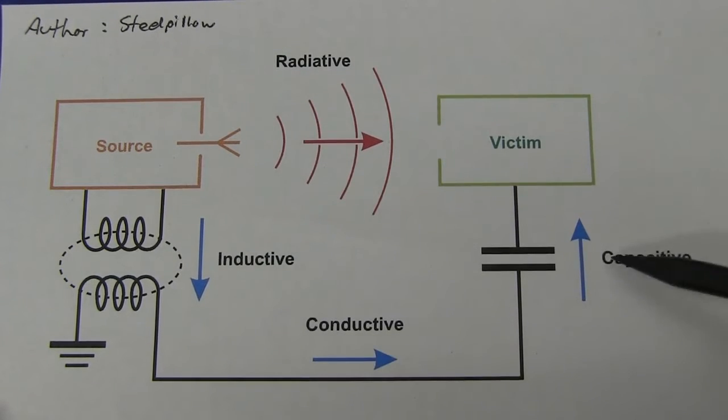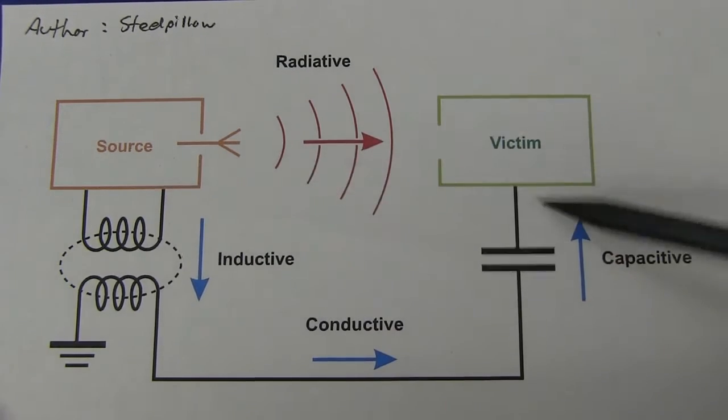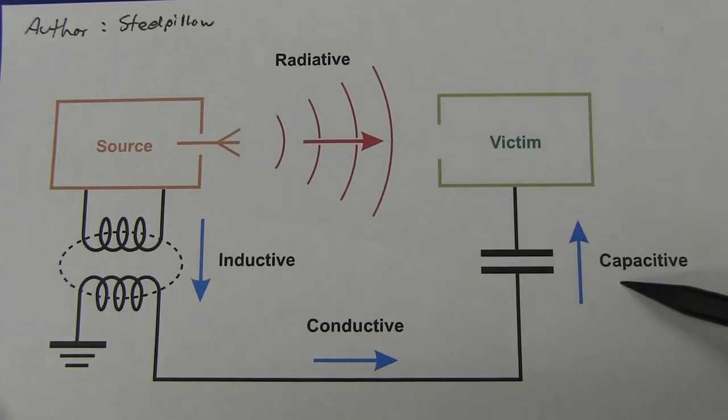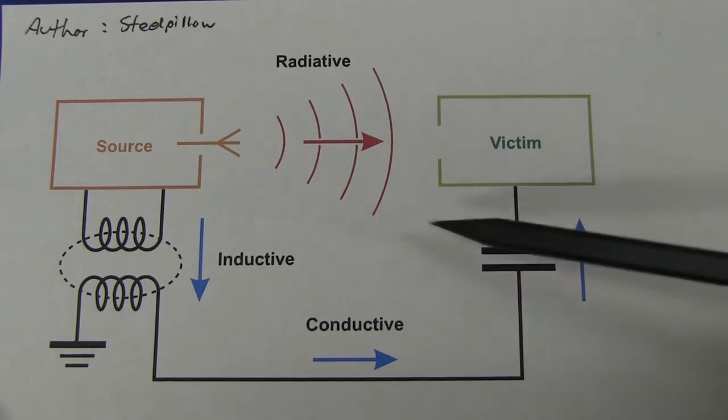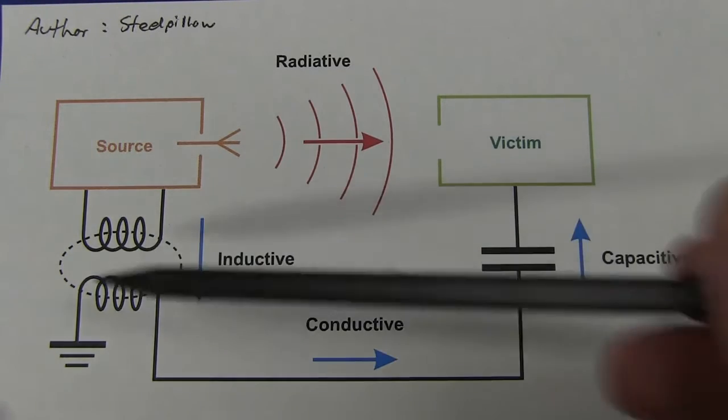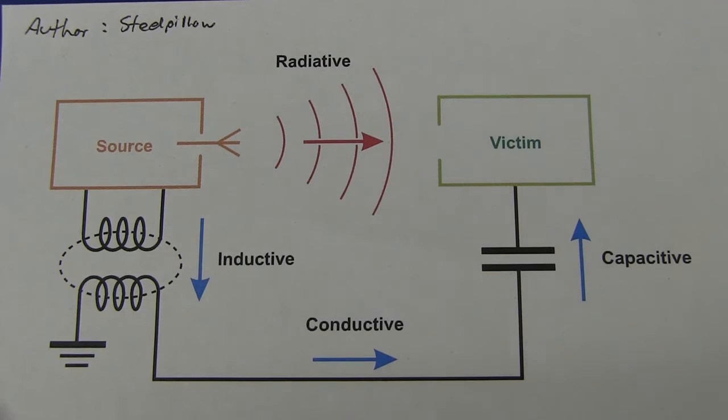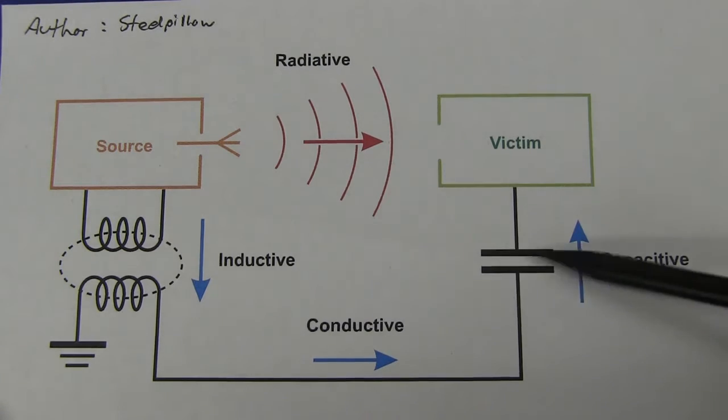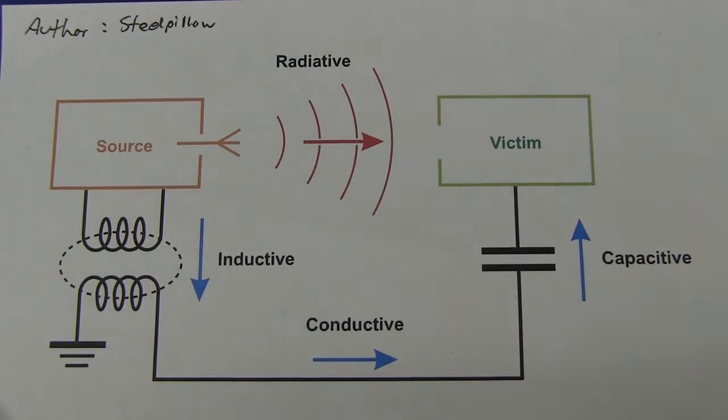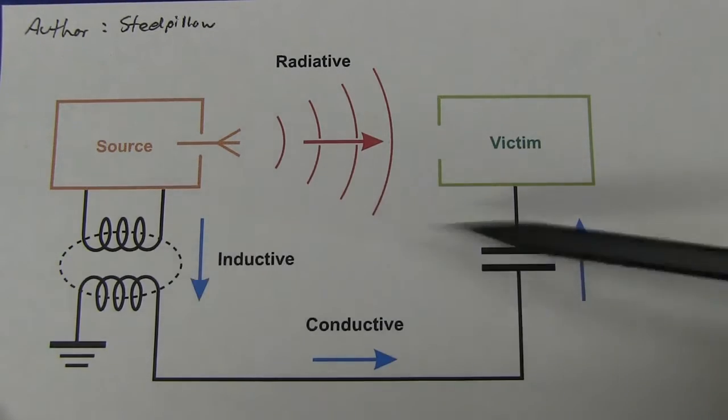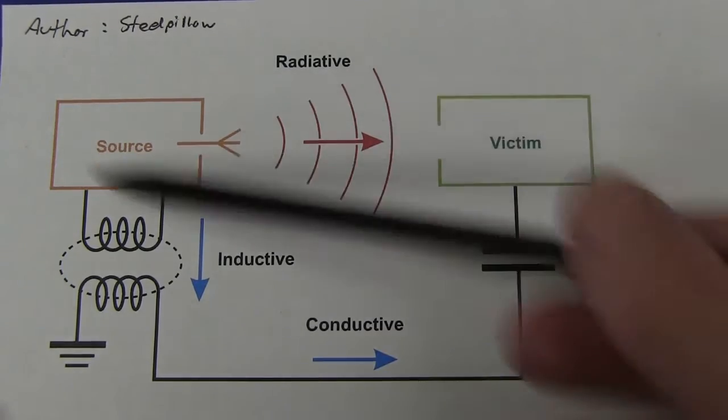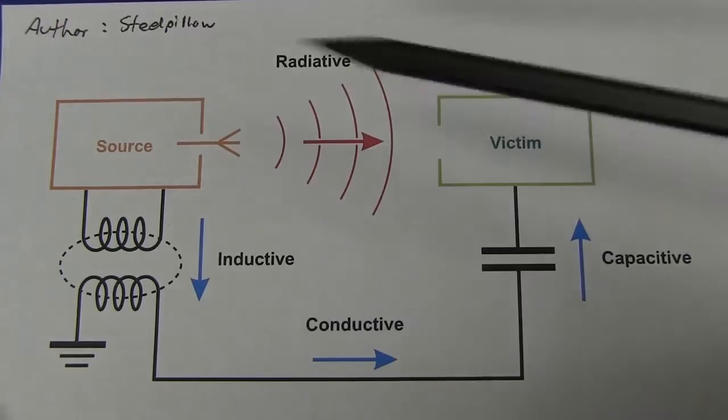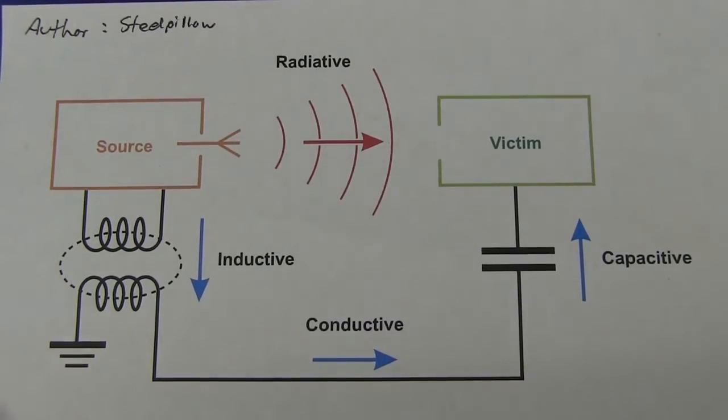There are two others, of course, there's capacitive coupling from your source to your victim, over here as it's called, and there's also inductive coupling as well. But because inductive and capacitive coupling are near-field effects, pretty much they are only covered, they're only required to meet some sort of standard in very specific cases for products. So most products will not be tested for these near-field effects. But they will be tested for radiative interference and, or emissions, and conductive emissions.